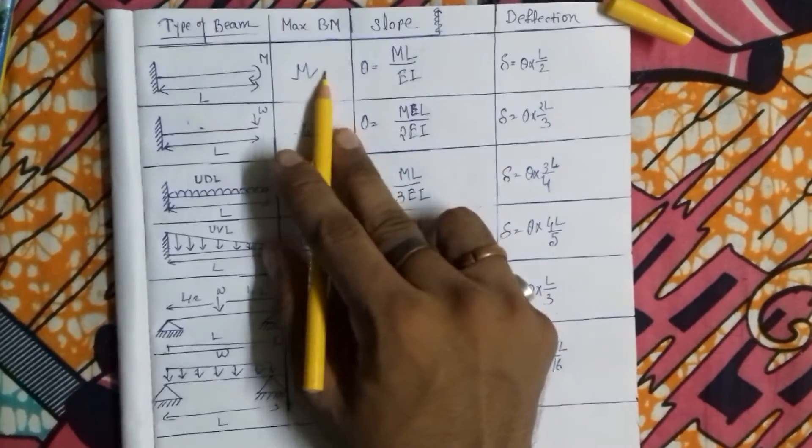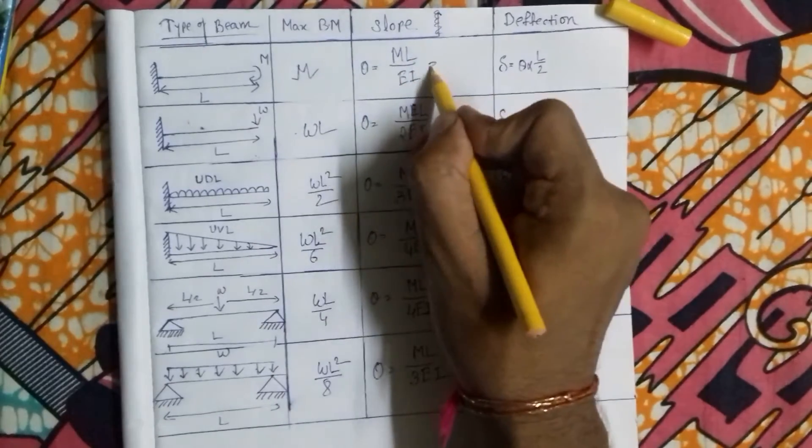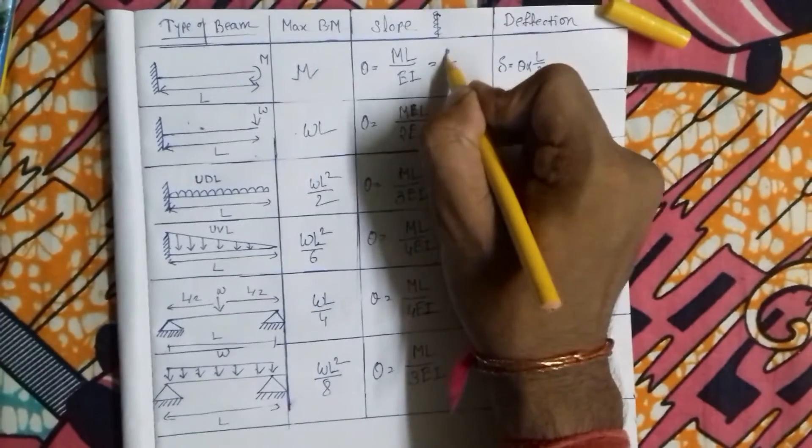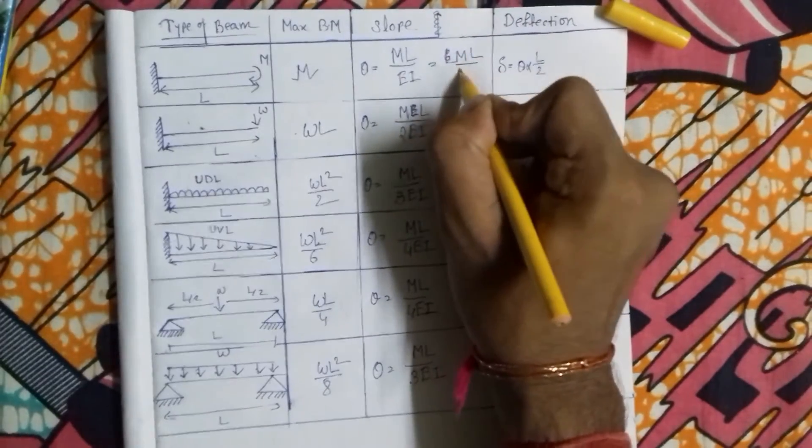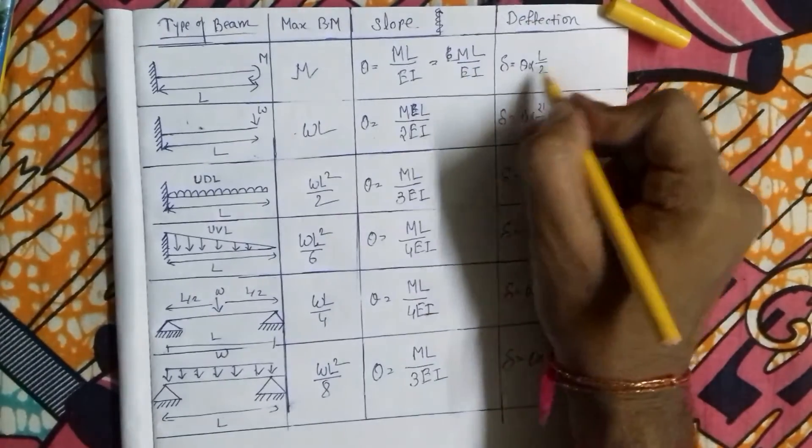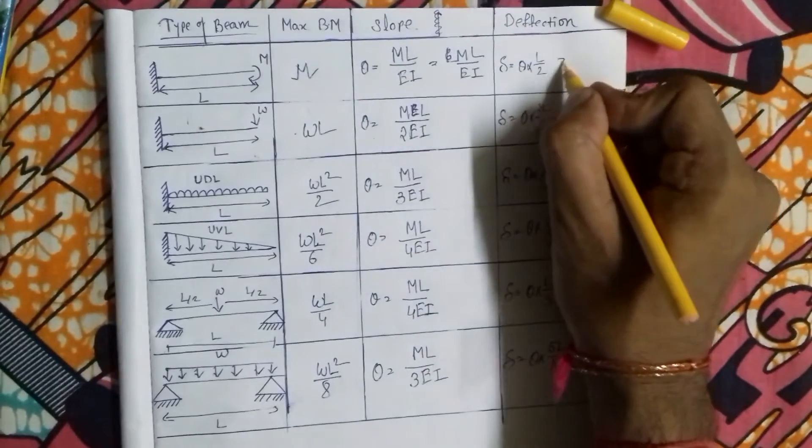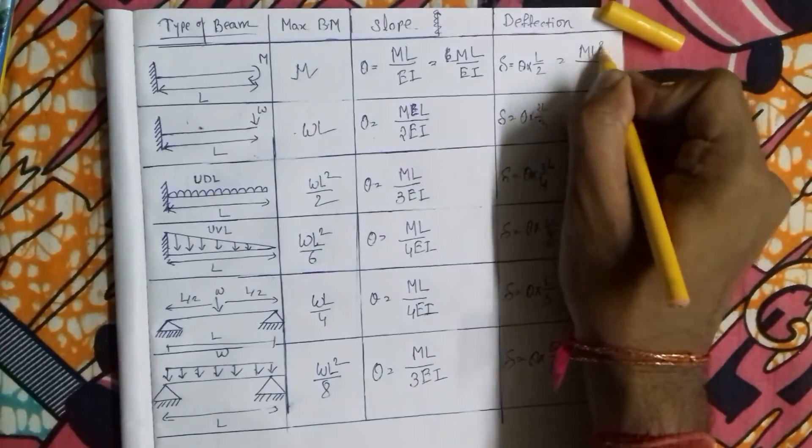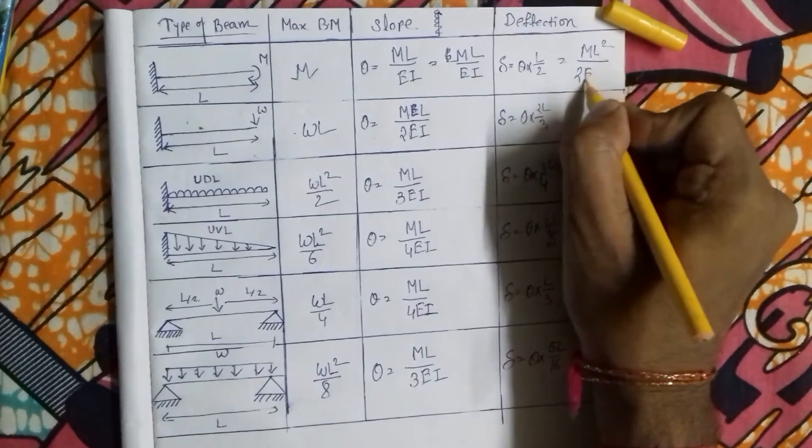We put the value of M here. So here M is M, so ML by EI, and theta into ML² by 2EI.